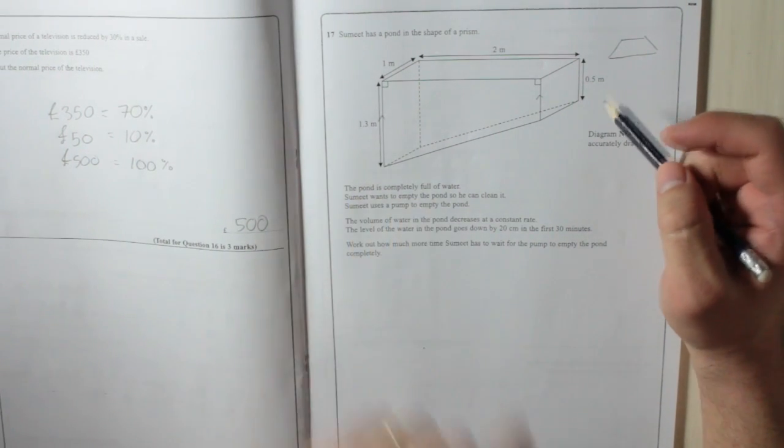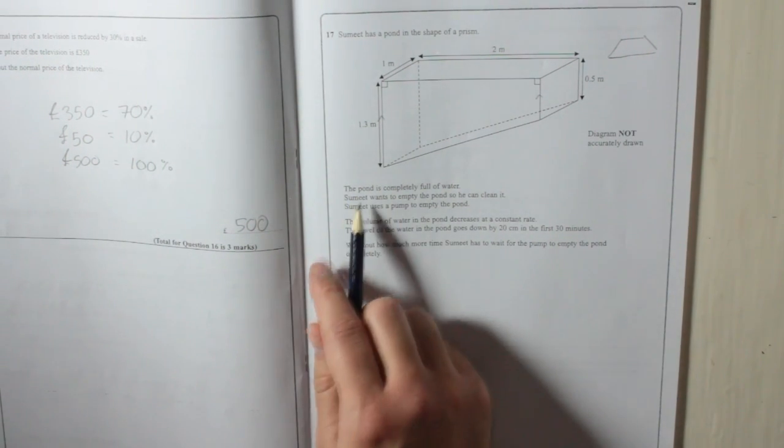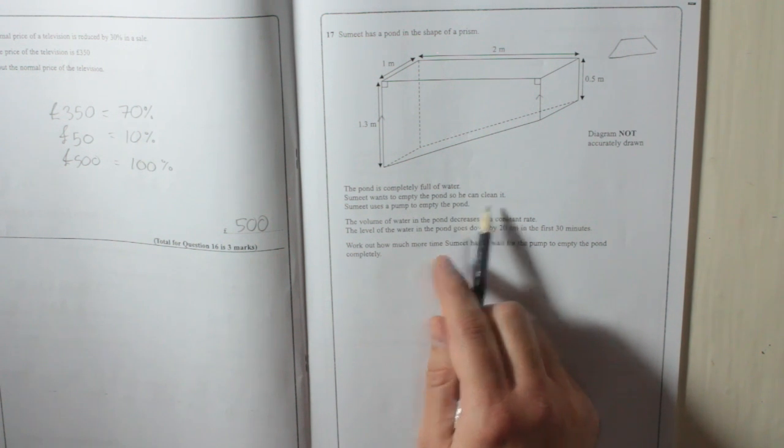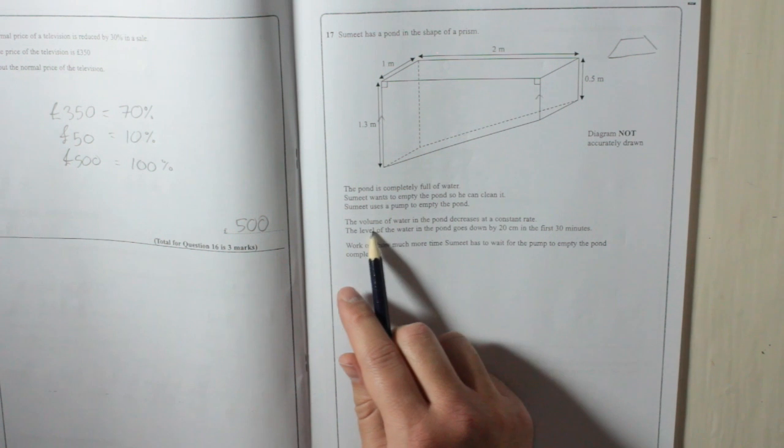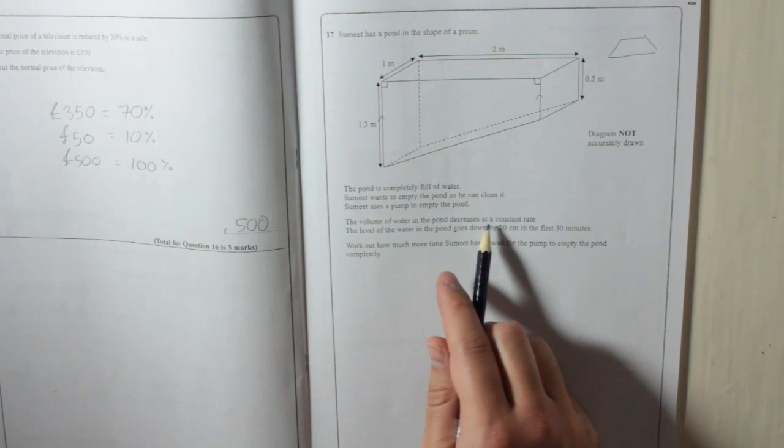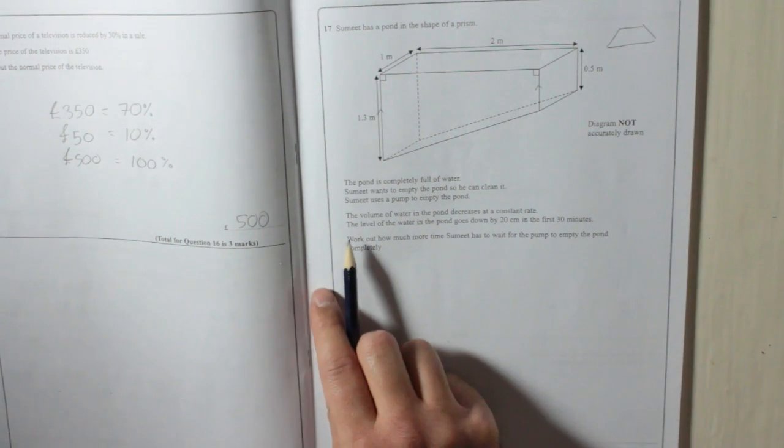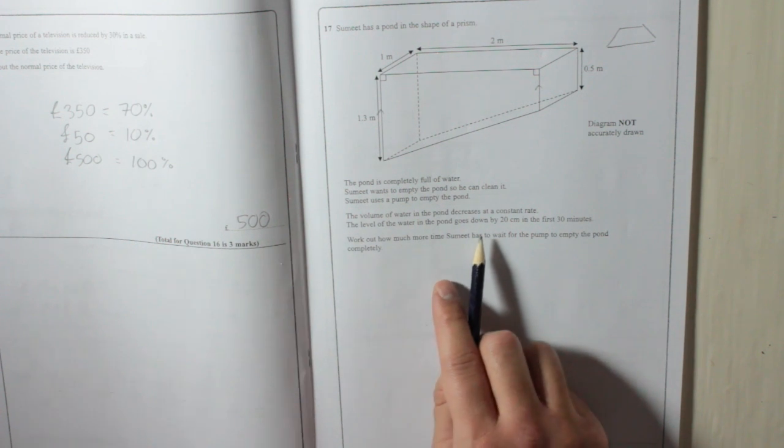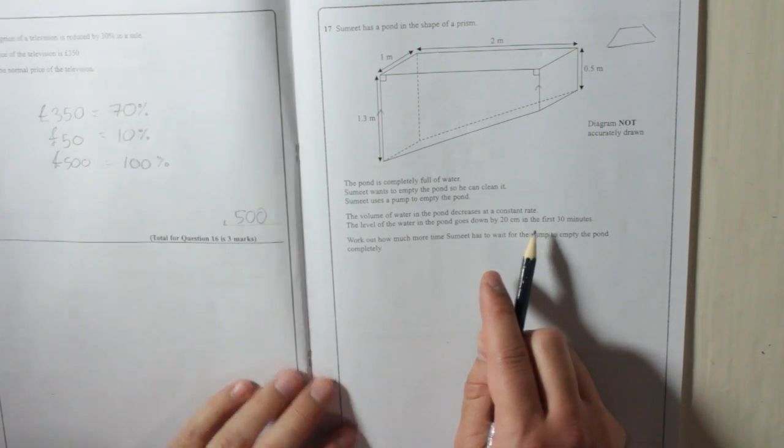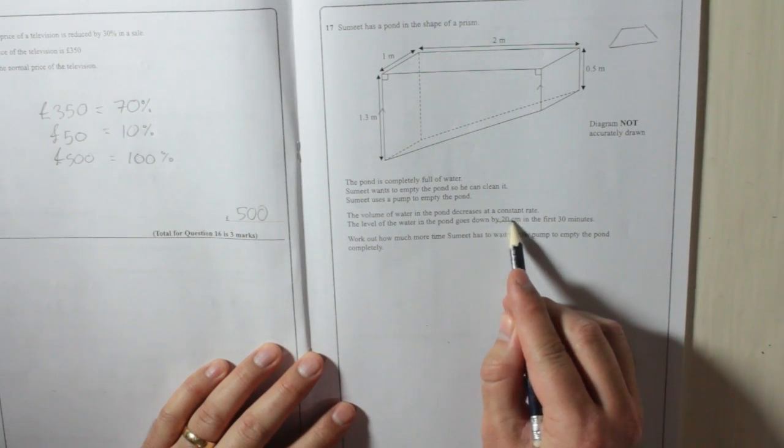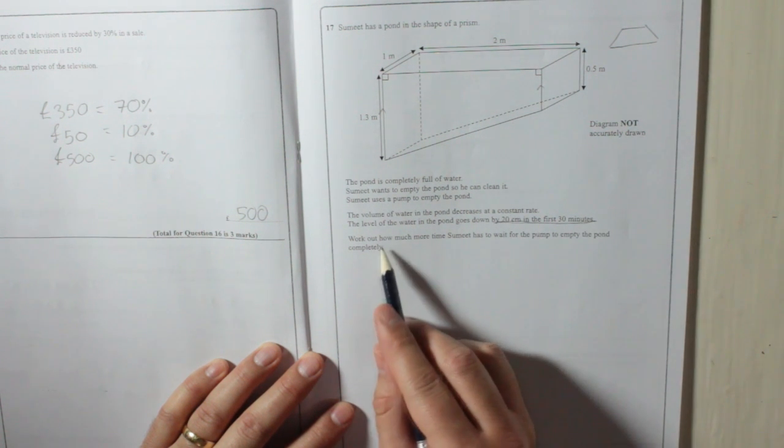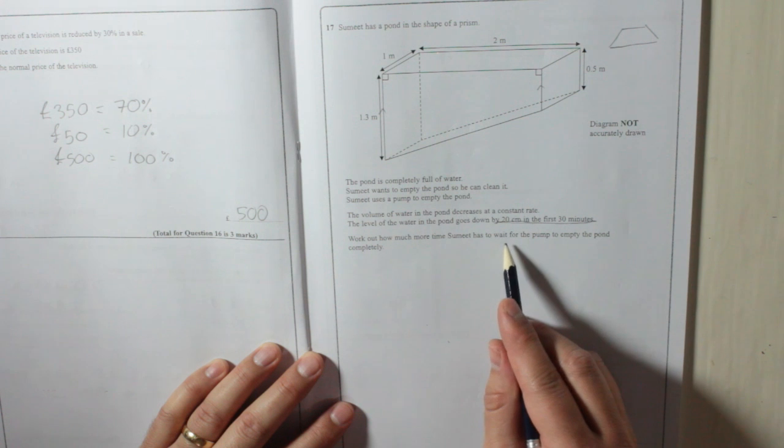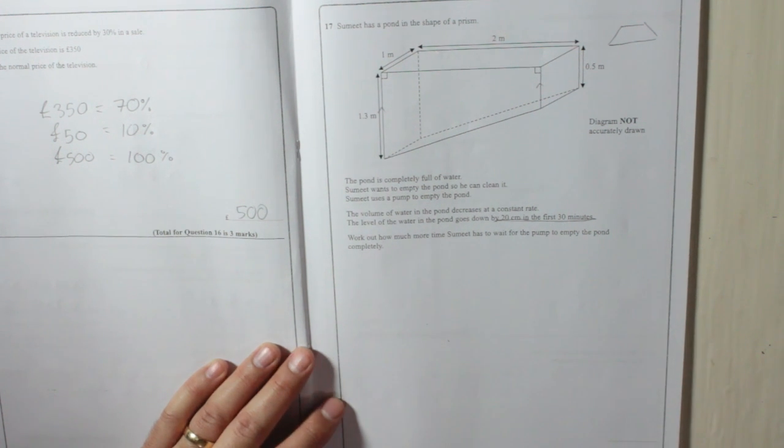The pond is completely full of water. Summit wants to empty the pond so he can clean it. Summit uses a pump to empty the pond. The volume of water in the pond decreases at a constant rate. The level of the water in the pond goes down by 20 centimeters in the first 30 minutes. Work out how much more time Summit has to wait for the pump to empty the pond completely.